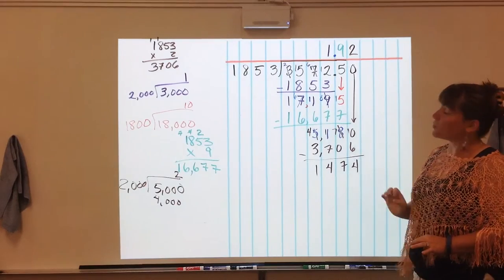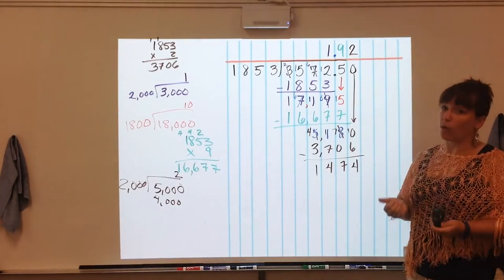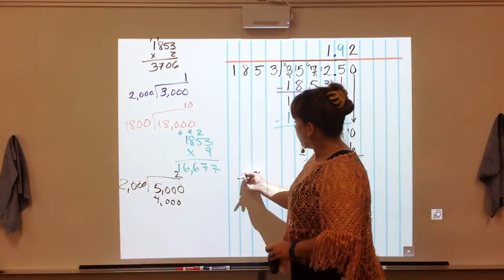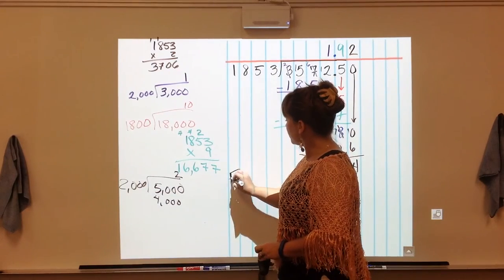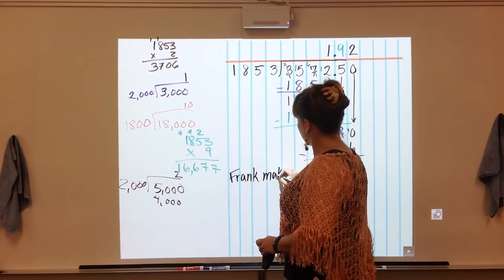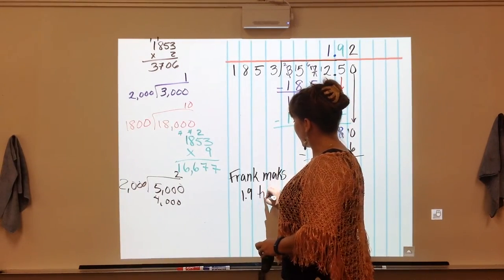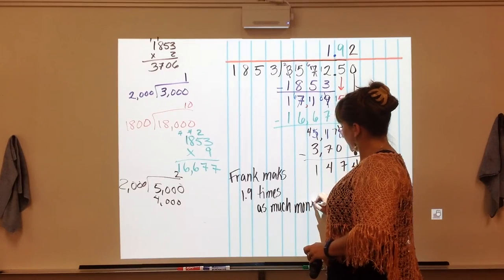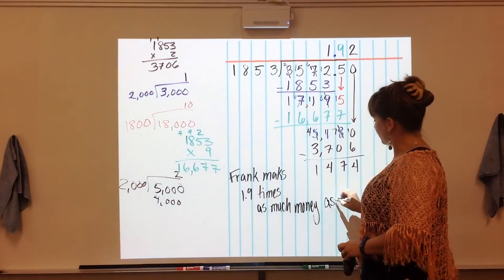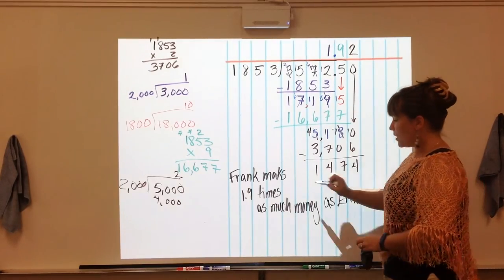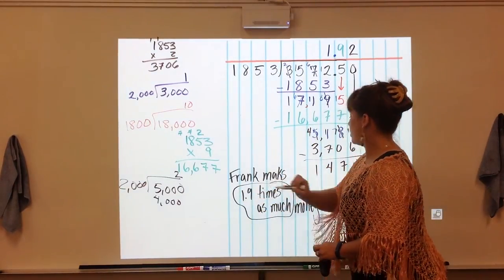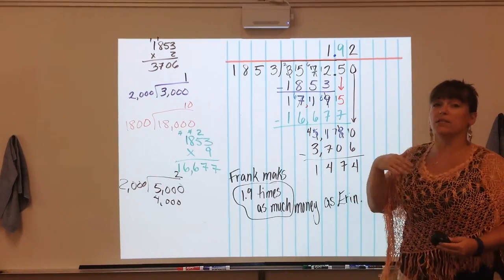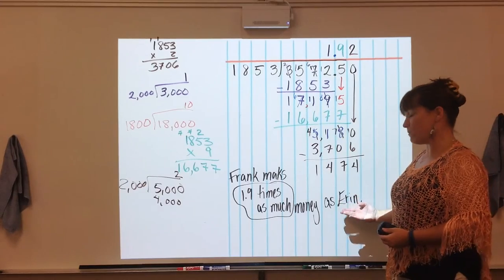But we can stop because now we know that we can just have our answer be 1.9. All that to say, as a final answer, Frank makes 1.9 times as much money. Now if you just wrote this, that would have been sufficient. I just wrote it as a sentence to give you back that context that we are finding out how many times more Frank has compared to Erin.